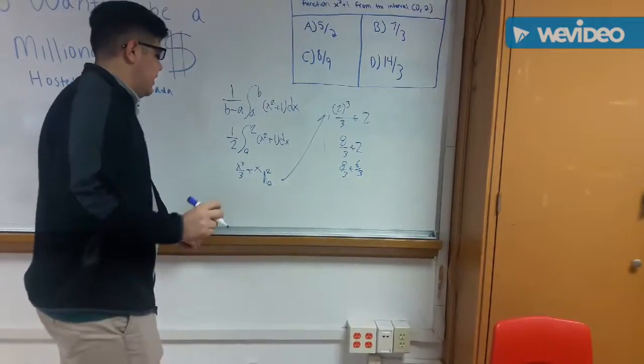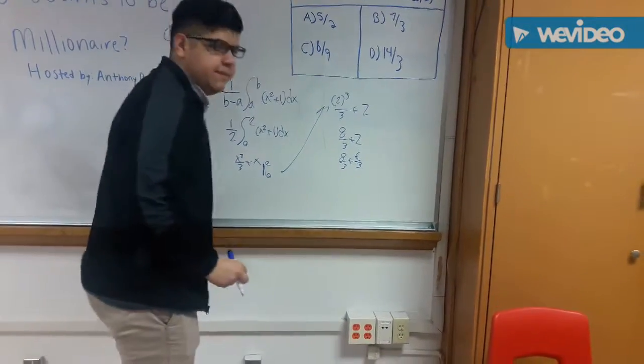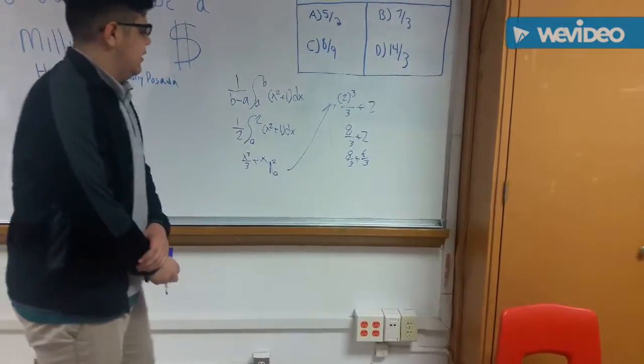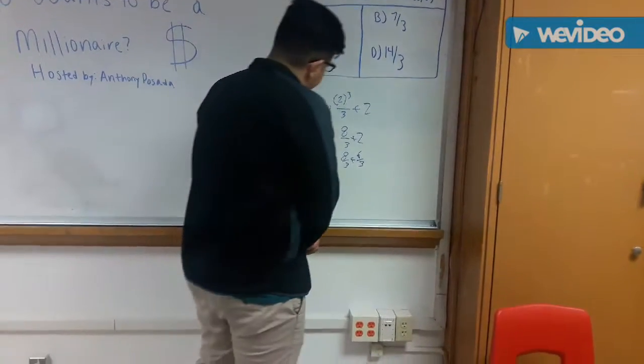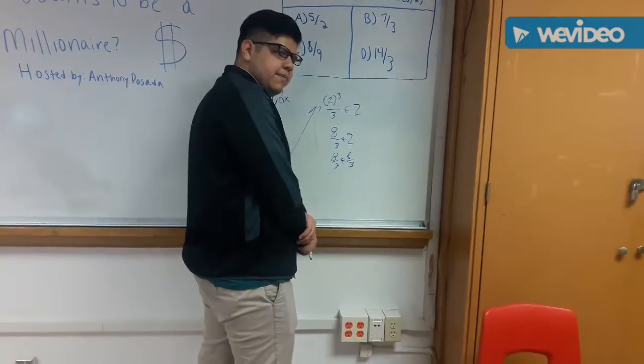Okay, so right now I'm at 8 over 3 plus 6 over 3. Yes. After that, I should have, well, 14 over 3. Yeah.